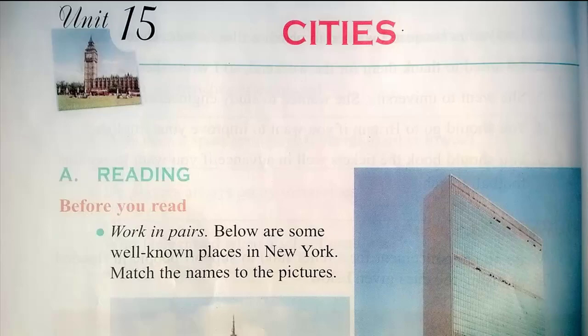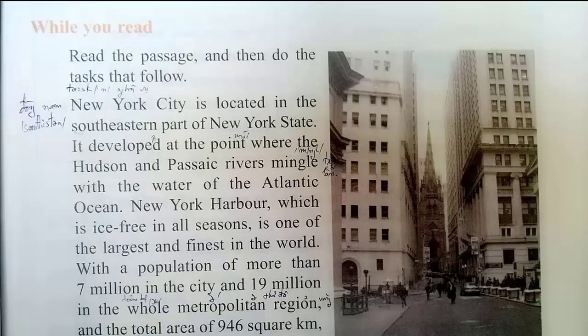Unit 15 Cities. Reading: New York City is located in the southeastern part of New York State. It developed at the point where the Hudson and Passaic rivers mingle with the waters of the Atlantic Ocean. New York Harbor, which is ice-free in all seasons, is one of the largest and finest in the world. With a population of more than 7 million in the city and 9 million in the whole metropolitan region.